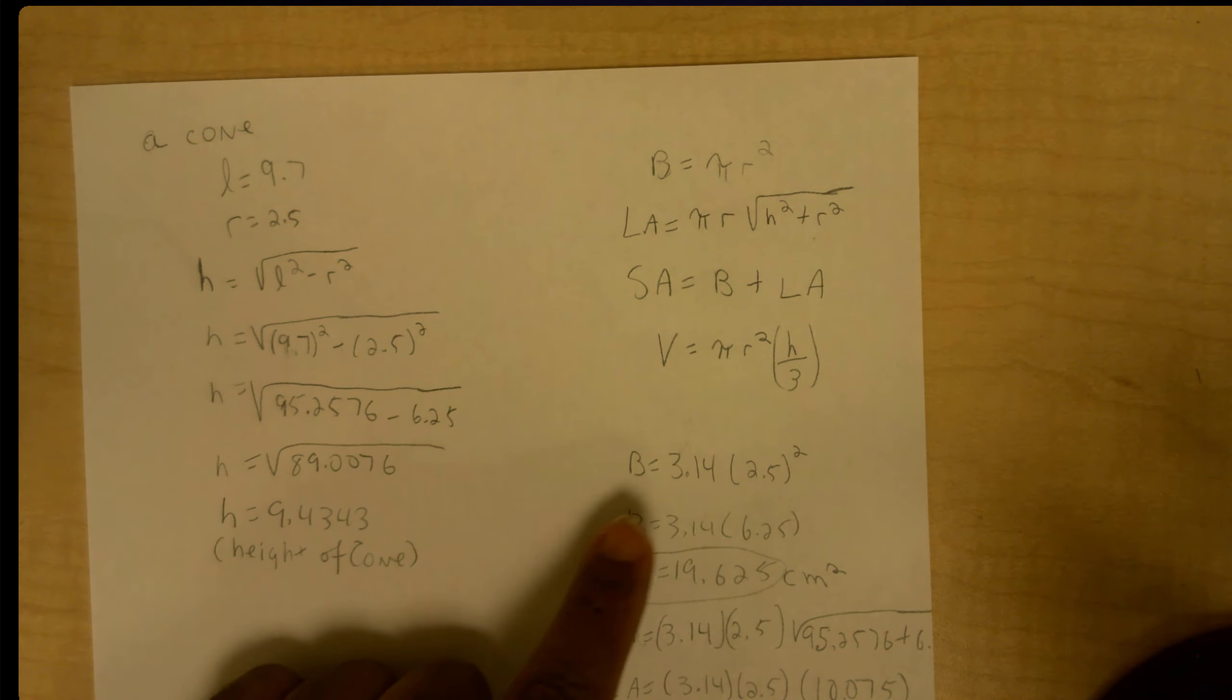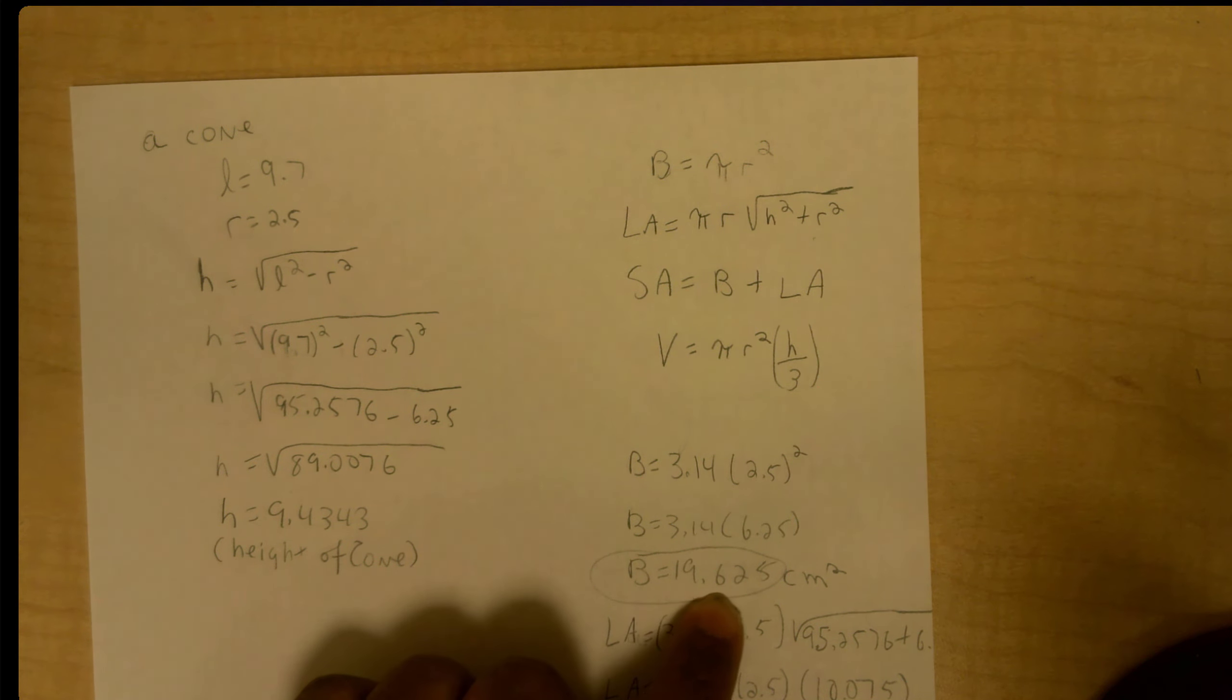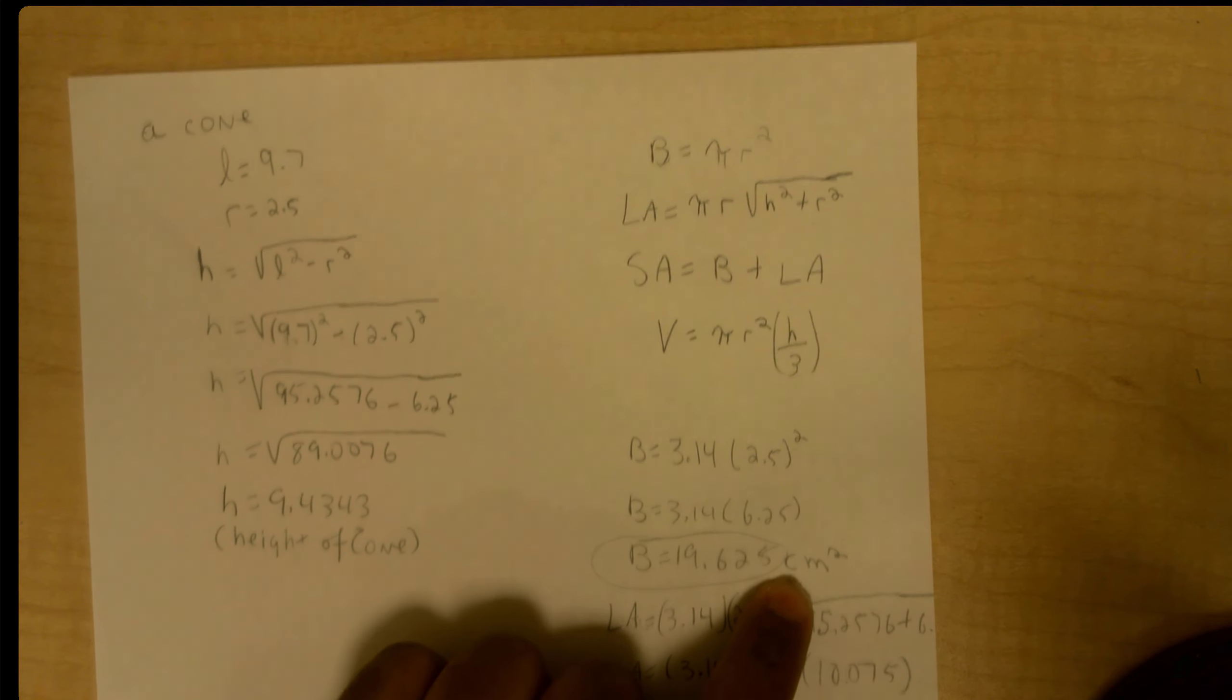So starting out here I'm using 3.14 for Pi, and Pi r squared 2.5 squared, and I squared it and multiplied it out and my base is 19.625 square centimeters.